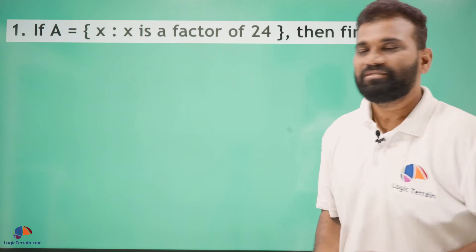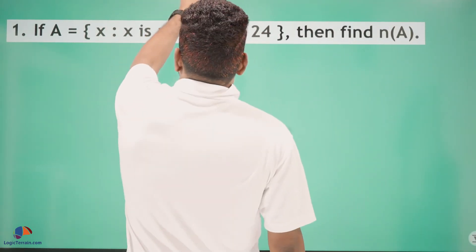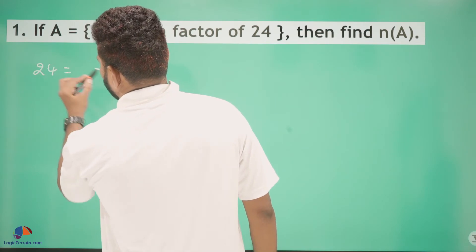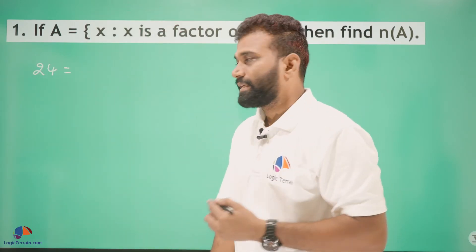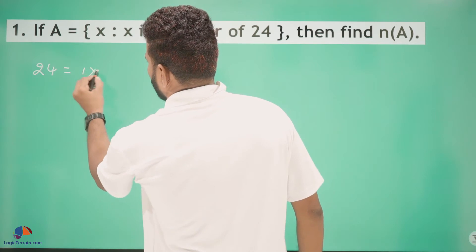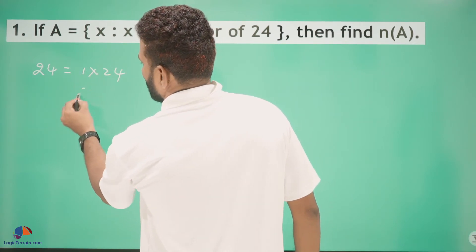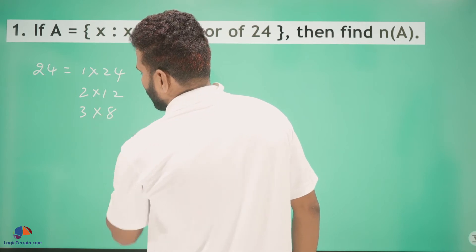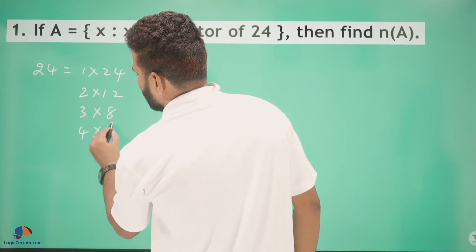First, let us find factors of 24. 24 can be written as the product of 1 × 24, 2 × 12, 3 × 8, and 4 × 6.